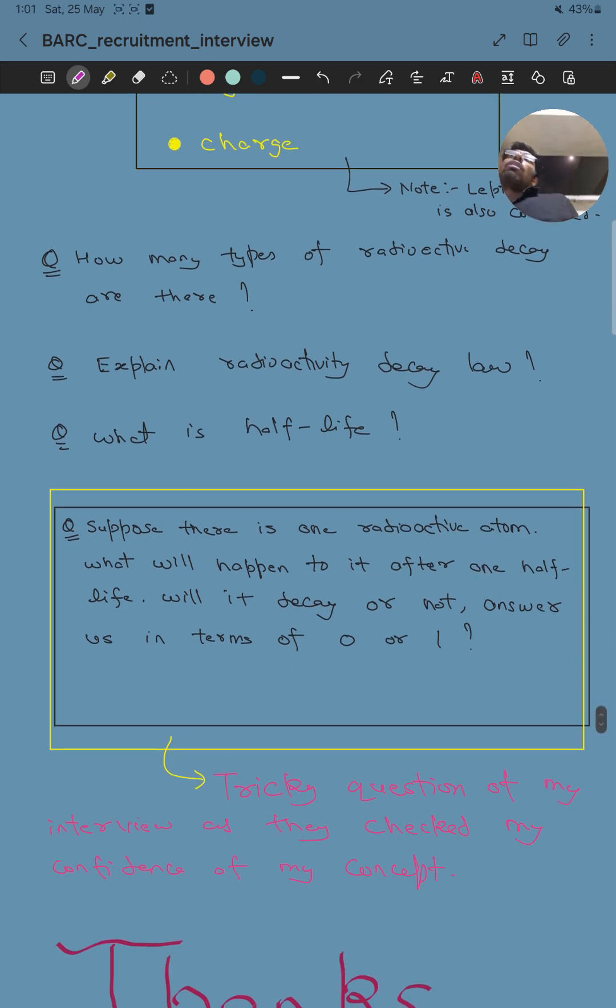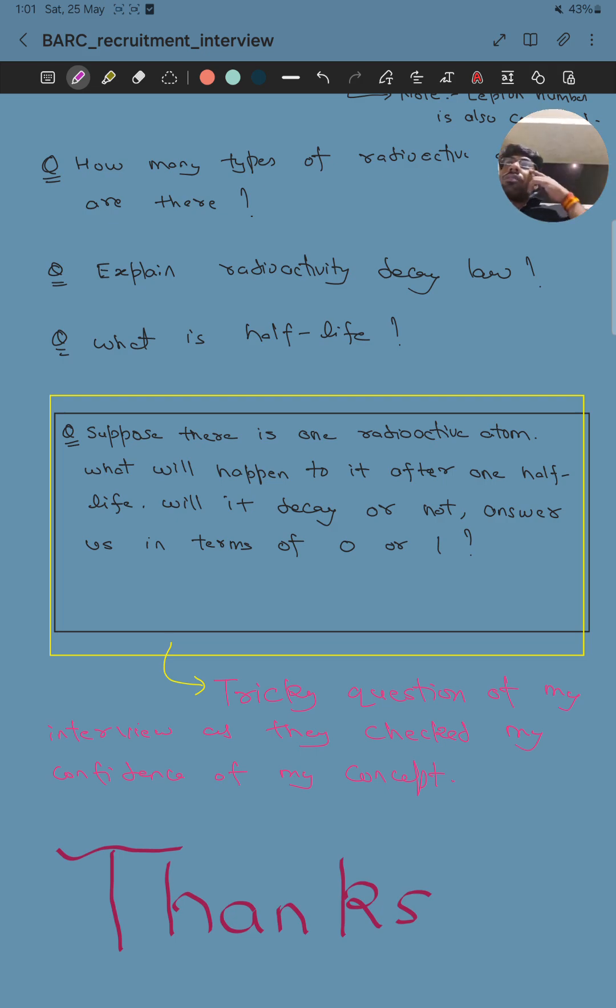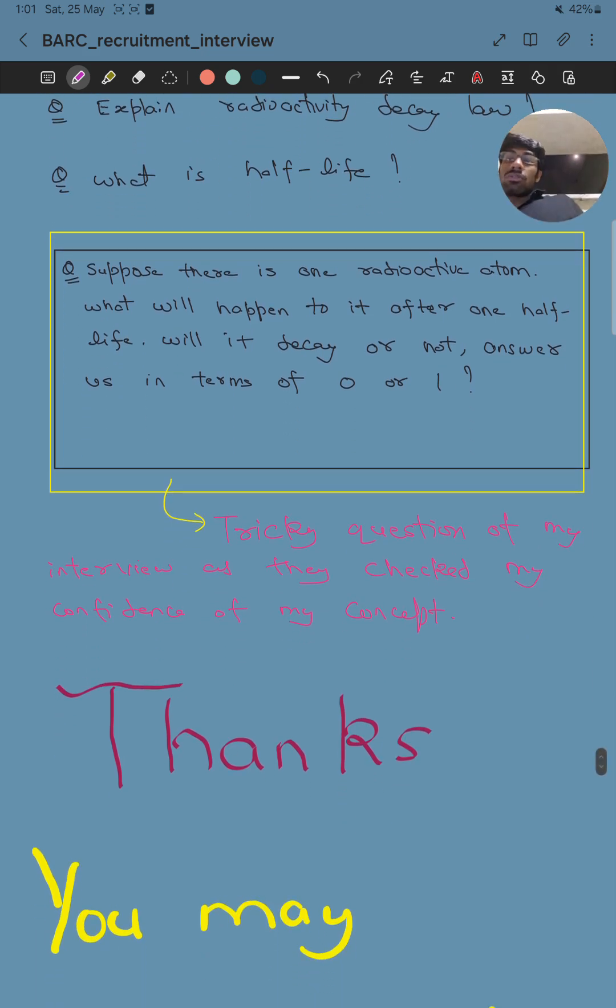At the last, the tricky question of my interview. They were trying to distract me, checking my confidence. They may do this with you also, so you should be careful. If you are confident about your concept, you should not be distracted. The question was: Suppose there is one radioactive atom. What will happen to it after one half-life? Will it decay or not? Answer in terms of zero or one. You know this is a statistical phenomenon, very probabilistic. We can't say whether it will decay or not. It's probabilistic. We can't say whether the atom will decay or not. This was the tricky question and the last question of my interview.